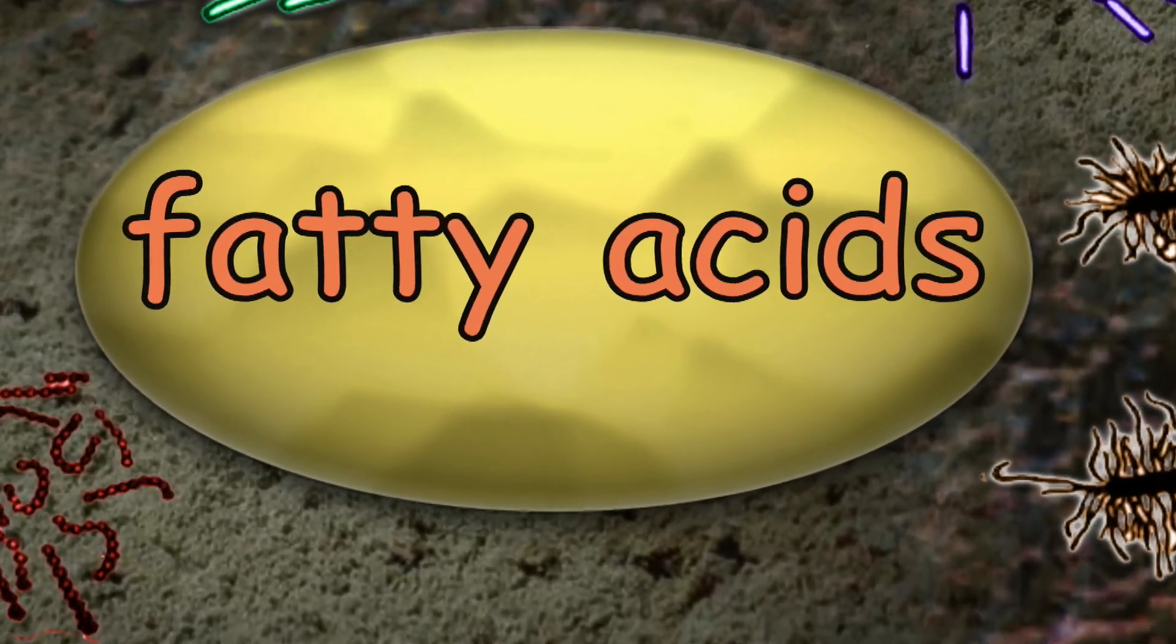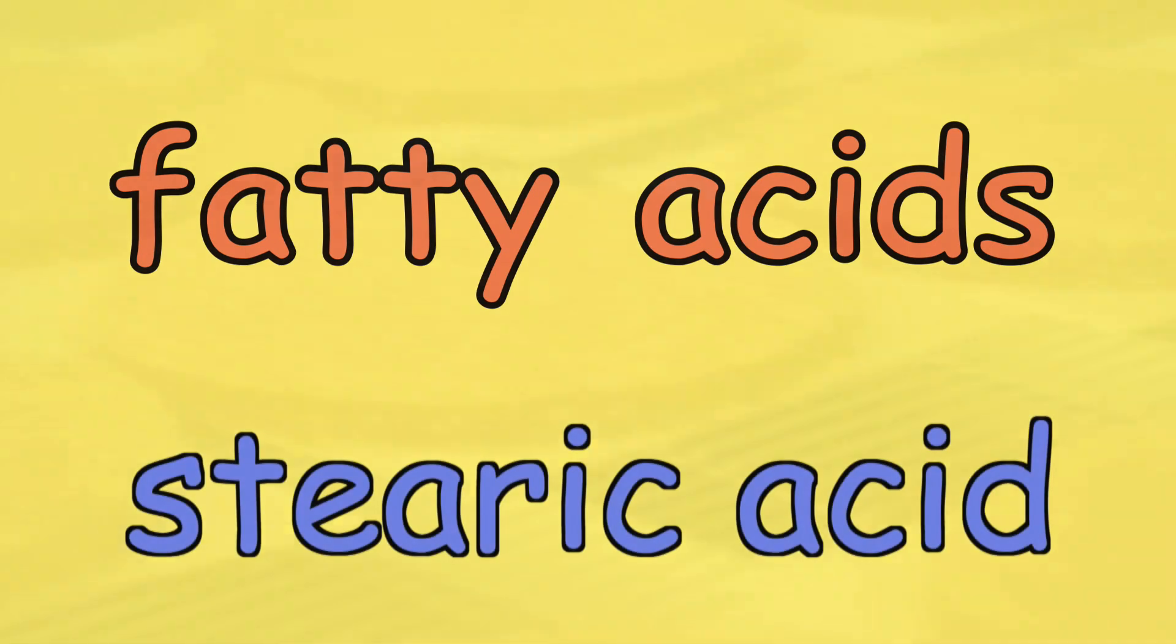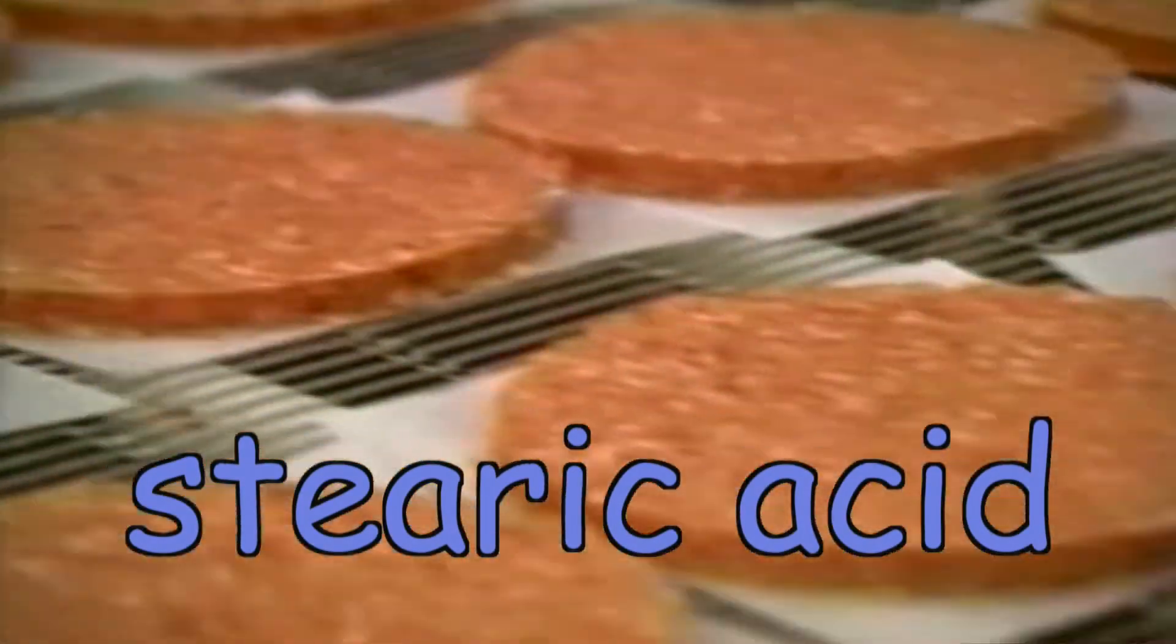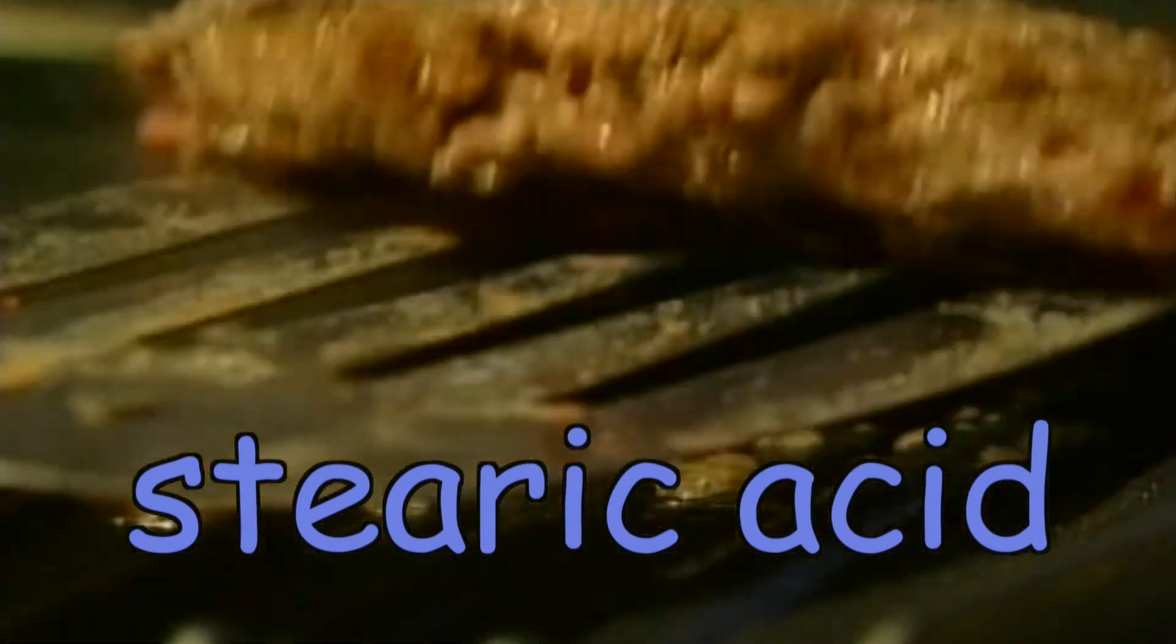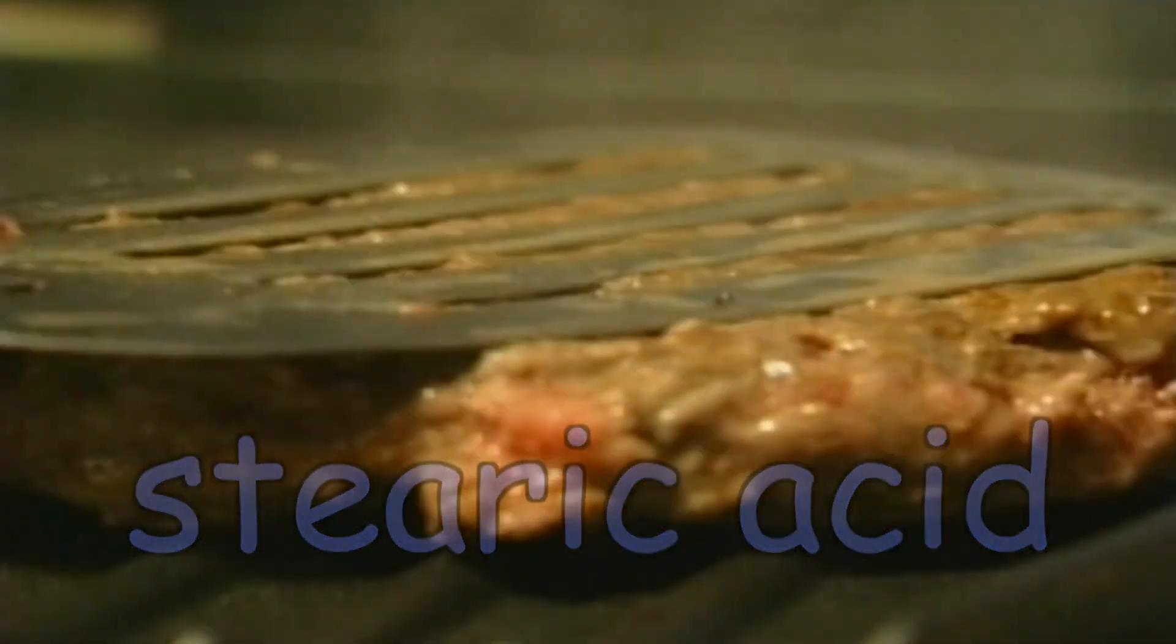Things like fatty acids, for example, stearic acid found in animal fat like that in ground beef. In high heat, this normally solid fatty acid melts, spatters. Later, it congeals.